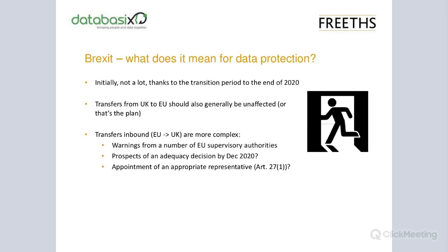The question then will be what are the implications for transfers between the UK and mainland Europe. At that point the UK will become like any other third country — like the US, South Africa, or India — countries that don't have an adequacy agreement in place. The ICO has said that Europe will continue to be treated as an adequate destination for our legislation, so transfers out from the UK shouldn't be a problem. But transfers inbound are more problematic.